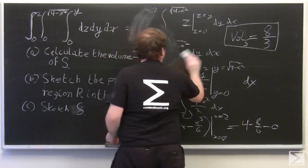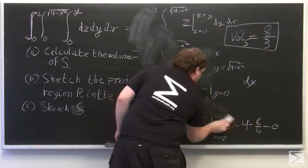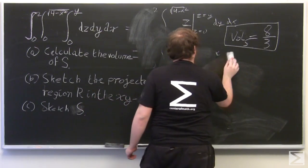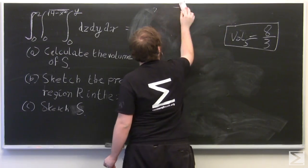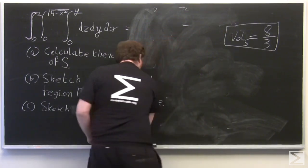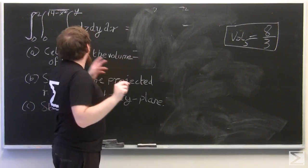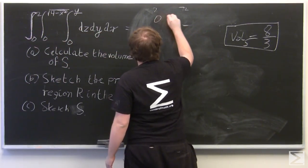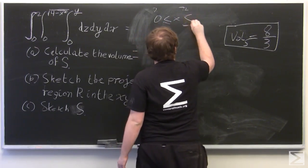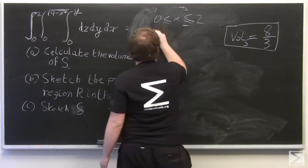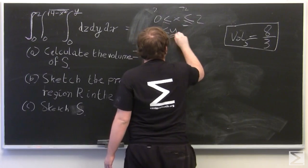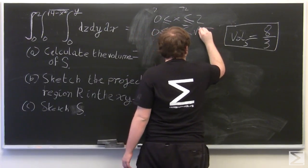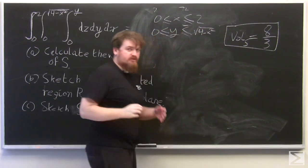So I'll erase some of my work here, give myself some space. And so we have from the outermost two limits of integration, that 0 is less than or equal to x is less than or equal to 2, and 0 is less than or equal to y is less than or equal to square root of 4 minus x squared.